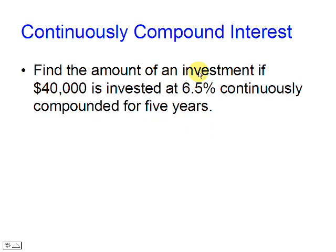We are asked to find the amount of an investment if $40,000 are invested at 6.5% continuously compounded for five years. The principal is 40,000, the annual rate is 6.5%, and the time is five years.